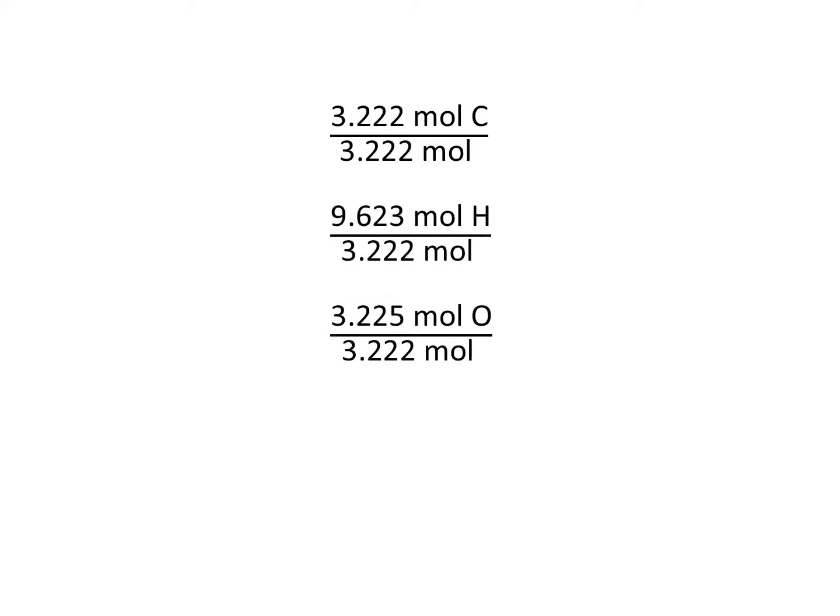Doing that, this is what we find. For carbon, we have 1. For hydrogen, we have 2.99, which rounds to 3. We can round to 3 because we are within the one-tenth difference between 2.99 and 3, so it's okay to round here. And then the last one for oxygen would be 1.